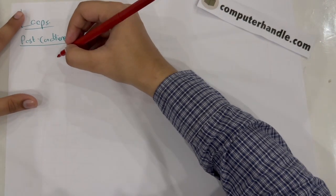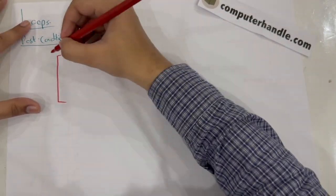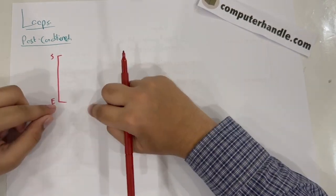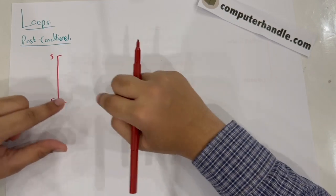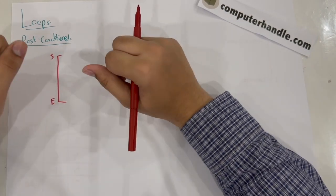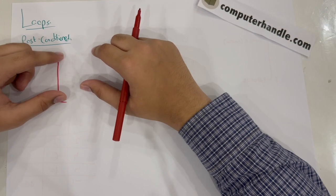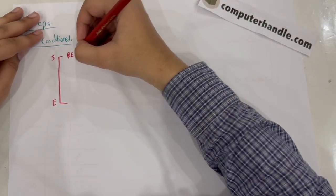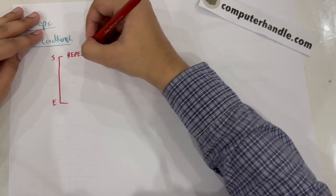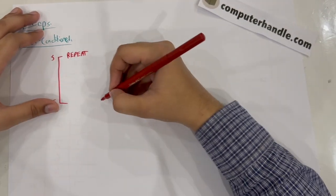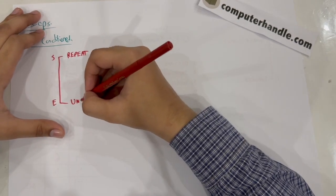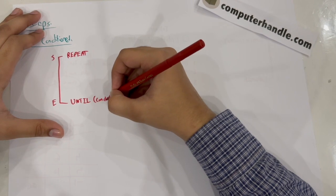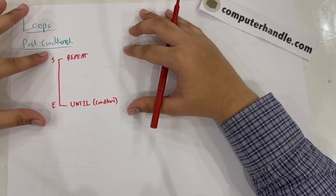Again, like any loop, we have a start and an end — those are the keywords, or you can say the syntax. But this time the condition has to be at the end. We can't just write 'while' and 'end while' — we need better keywords. The way we write them in pseudocode is: 'repeat ... until condition is true.'